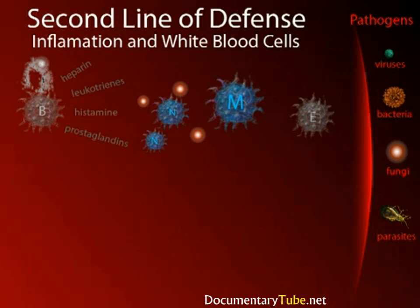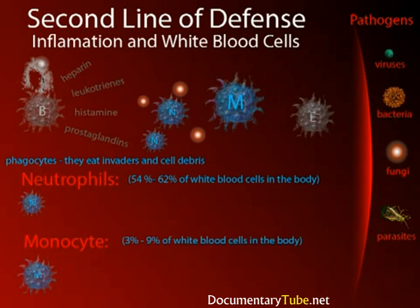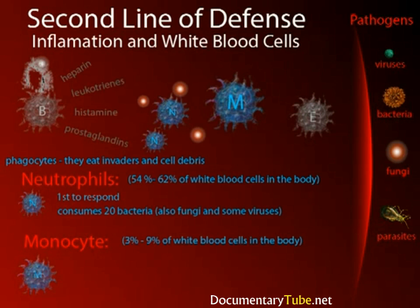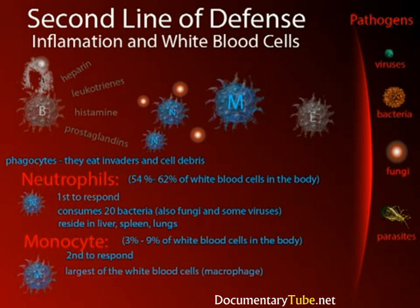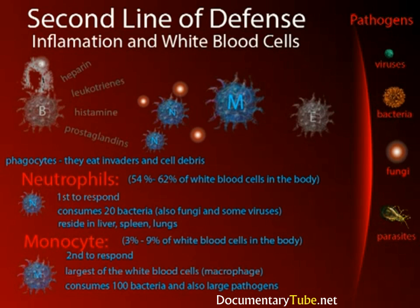Any bacterium or virus can potentially be attacked by white blood cells, so they're nonspecific. White blood cells generally have about a 12-hour lifespan and are produced in the bone marrow. The neutrophils and monocytes are phagocytes — meaning they can eat other cells. Neutrophils are typically the first phagocytotic white cells to respond. They are not very large and can only consume about 20 bacteria before the end of their lifespan, but they can also consume fungi and some viruses. They hang out in the liver, spleen, and lungs until needed. The next to respond are the monocytes — the larger phagocytotic white blood cells, the big eaters. Once they enter the tissues, they are called macrophages, and these can consume about 100 bacteria in their lifespan. They also tackle the really large pathogens, such as parasites.